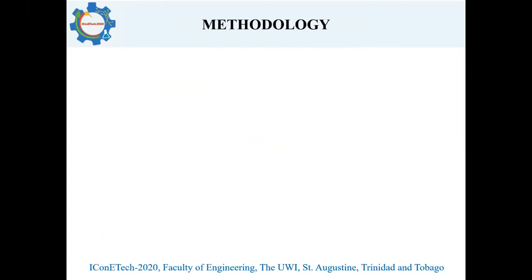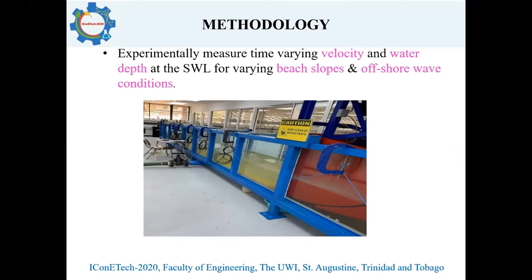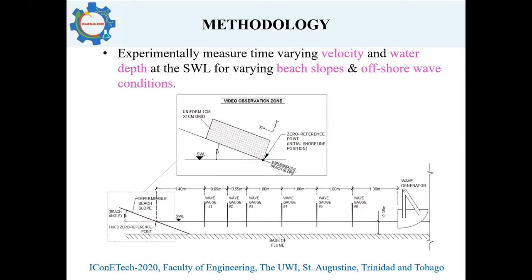The method used to develop the boundary condition was via a series of laboratory experiments within the coastal engineering flume located in the Department of Civil Engineering at the St. Augustine campus of the University of the West Indies. The experiments measured the temporal velocities and water depths at the still water line for varying beach slopes and wave conditions. Six wave gauges were deployed and a video observation zone was located at the impermeable beach slope end. The experimental procedure generated a series of waves and recorded wave gauge readings plus visual observations of run-up and run-down on the slope — 15 waves across five slopes, amounting to 75 conditions.